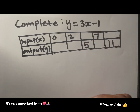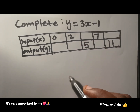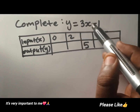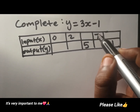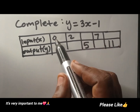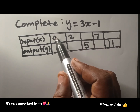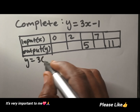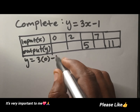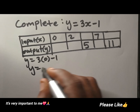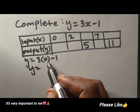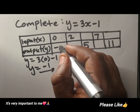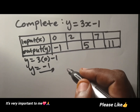Let's try to complete this table. The rule is y is equal to 3x minus 1. So what are you going to do? You start with the first input, which is 0. Wherever there is x, you put the input that we are working with, then minus 1. So this is going to give you 3 times 0 is going to be 0, minus 1 will be negative 1. So this is your first output.